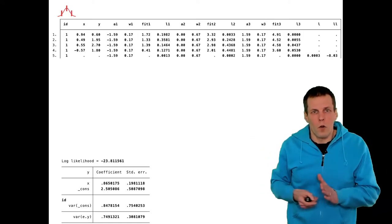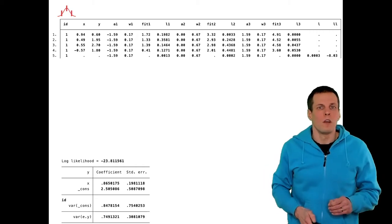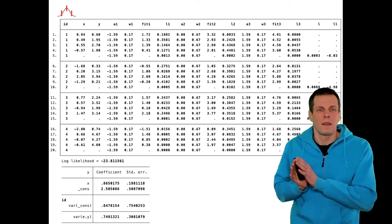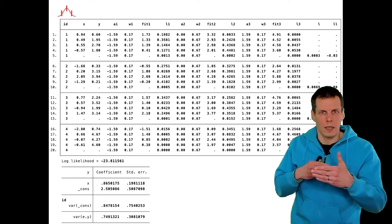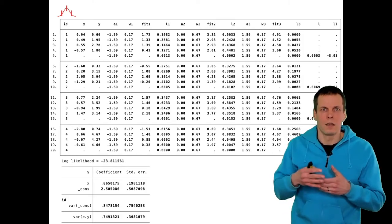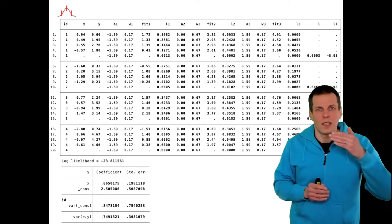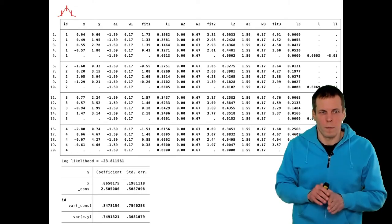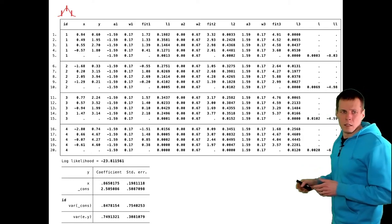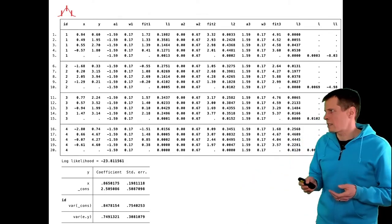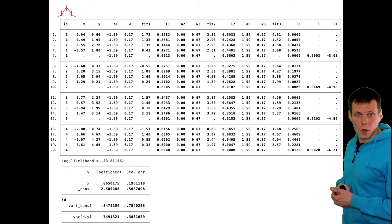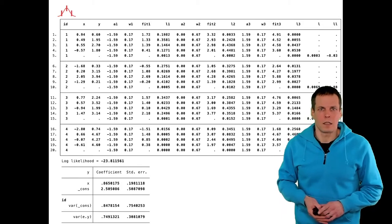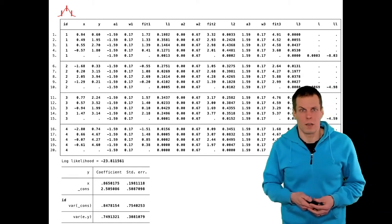We don't actually have the full likelihood of each individual observation, because observations within a cluster are not independent — the likelihood of one depends on another. Therefore we can only consider the likelihood at the cluster or group level. If we sum these group log-likelihoods, we get a total likelihood close to what Stata gives. It's not exactly the same because this is the non-adaptive version; Stata uses mean-variance adaptive quadrature, which performs a lot better in practice.